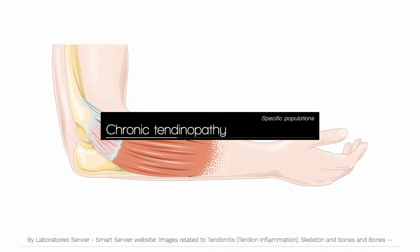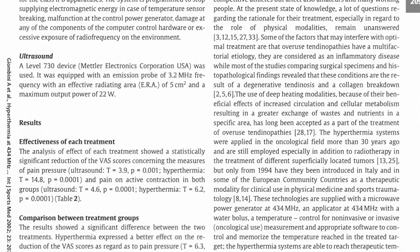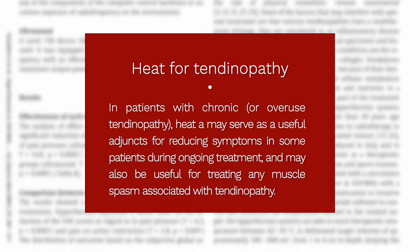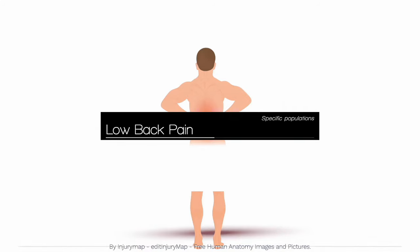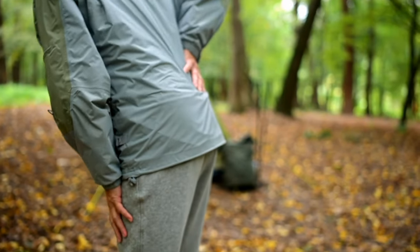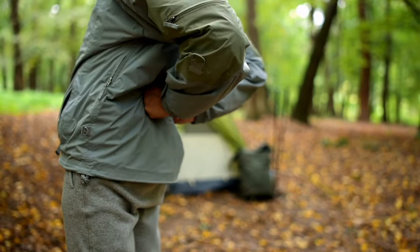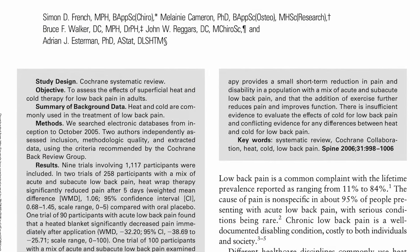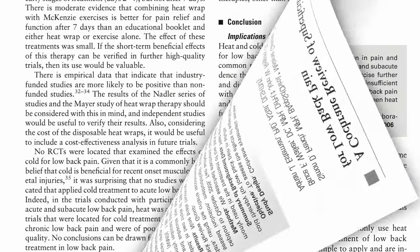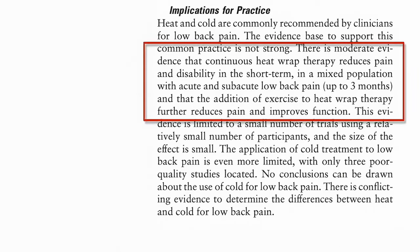In patients with chronic or overuse tendinopathy, heat may serve as a useful adjunct for reducing symptoms and treating any associated muscle spasm. For patients with low back pain, using a heating pad or heated wrap can help during the first few weeks of treatment, though it is not clear if cold helps as well. In a systematic review of nine trials including 1,100 patients with acute and subacute low back pain, superficial heat was superior to no heat for short-term pain improvement, while there was insufficient evidence to determine the effects of cold packs.